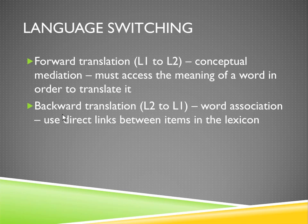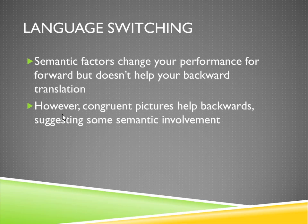When switching from language to language during translation, forward translation — going from L1 to L2 — requires conceptual mediation: you take the word in L1, figure out its meaning, then access that meaning in L2 to translate. So for 'cat,' you think about what 'cat' means, find that meaning in the L2 dictionary, and then translate. Backward translation — from L2 to L1 — is more of a word association. We don't go to the semantic level; there's a more direct link. Backward translation tends to be much quicker because it skips that extra meaning step.